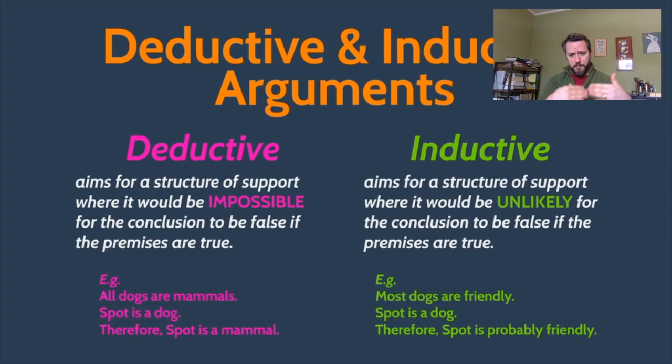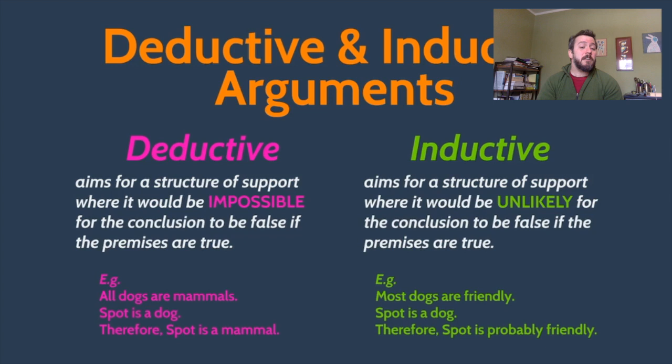That's how a deductive argument works. Compare that to an inductive argument. An inductive argument is one aiming for a structure of support that doesn't necessarily go for that sort of certainty that deductive arguments are going for — it doesn't aim for that airtight structure. Instead, an inductive argument is aiming for a structure where it would be incredibly unlikely for the conclusion to be false, so long as the premises are true.